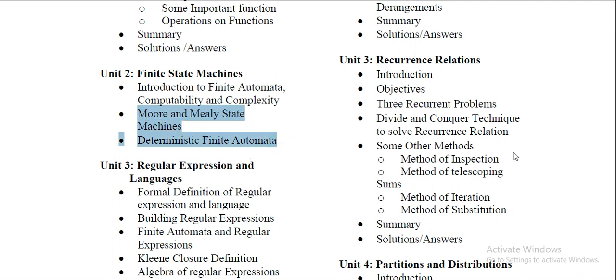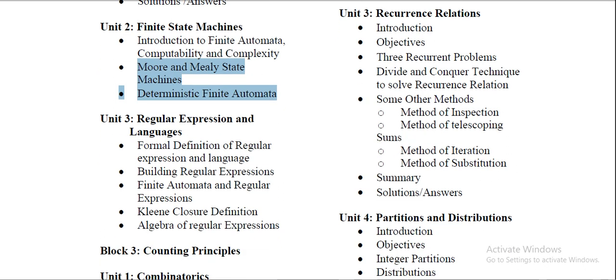Then when we talk about Unit 3, where we have the regular expressions and languages. So in which the formal, here we have some expressions in the languages that we need to study. The most important topic is Kleene closure. So Kleene closure you must know about this. What is this? And many questions are asked from this Kleene closure in every exam. And then this is the recurrence relations. So recurrence relations you have already covered in your MCS-211.